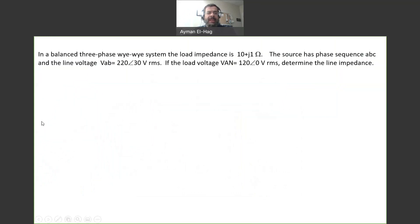The question says in a balanced three-phase Y-Y connection system, we have an impedance of the load equal to 10 plus J1. The source has a phase sequence ABC, which is a positive sequence, which is the regular sequence.